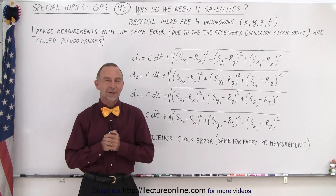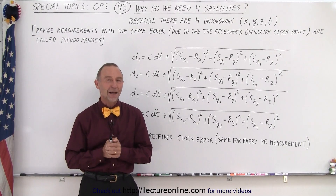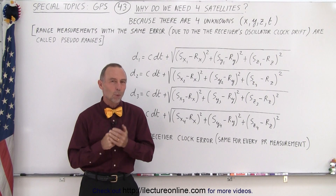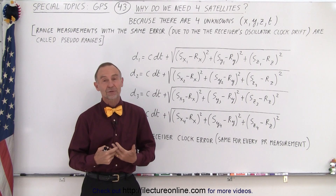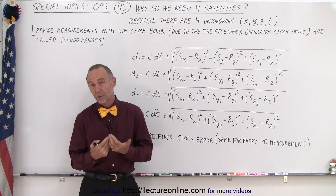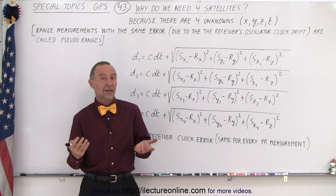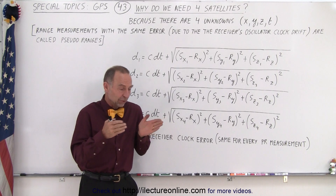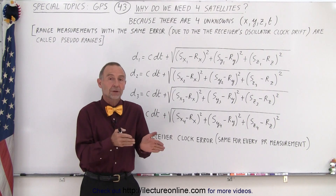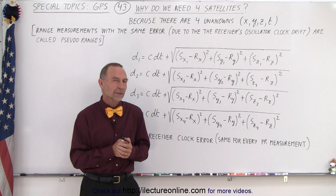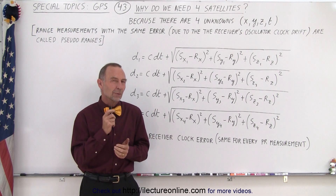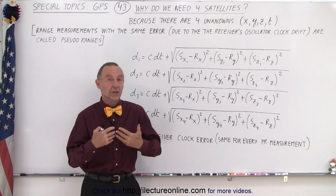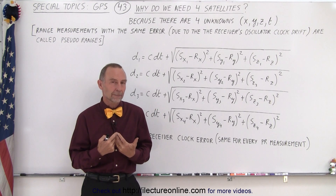Welcome to our lecture online. Now to answer the big question: why do we need four satellites for GPS? You would think that three satellites should be enough, because that's all you need to find the position anywhere in 3D space. But we need a fourth satellite because we need to deal with the clock error.